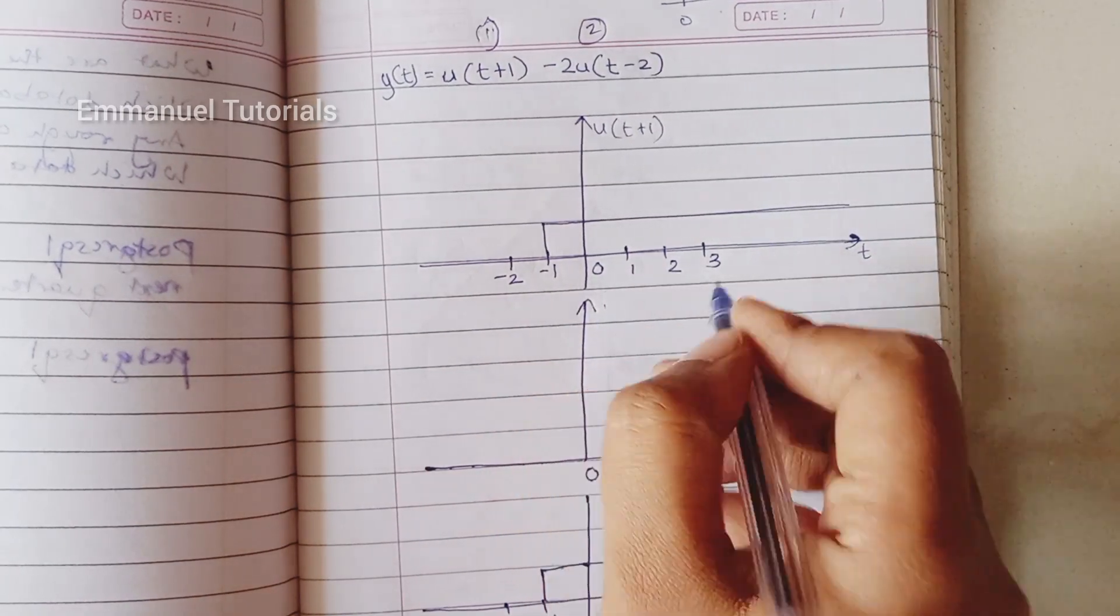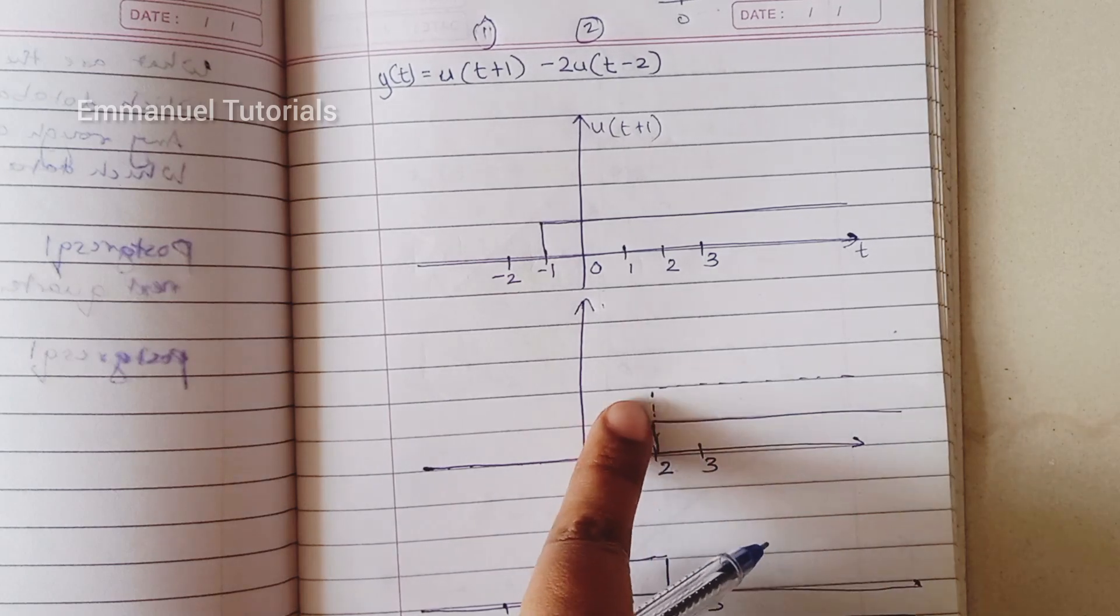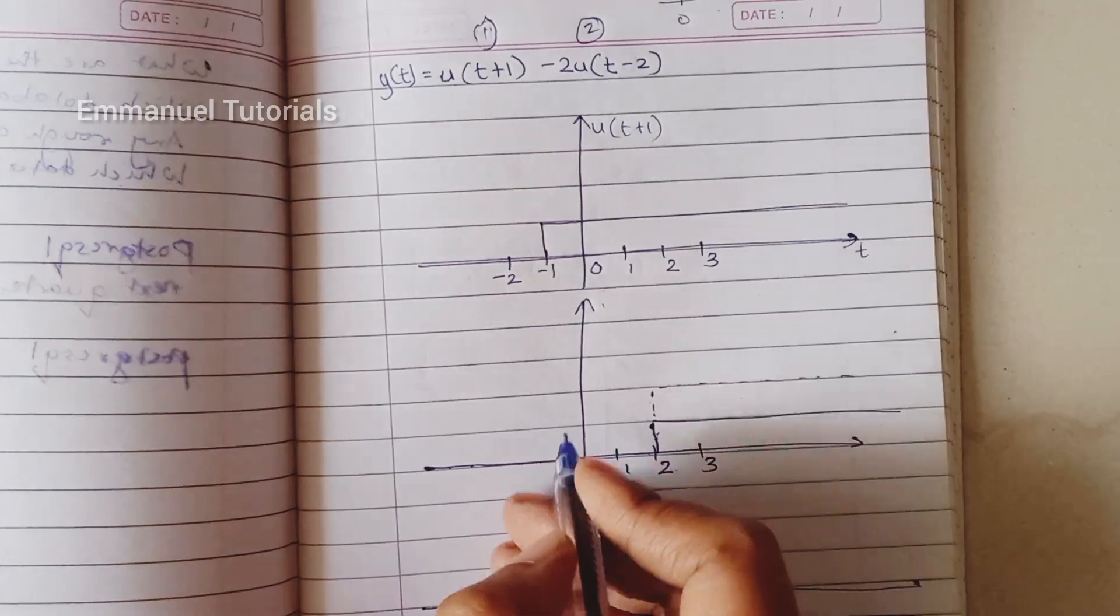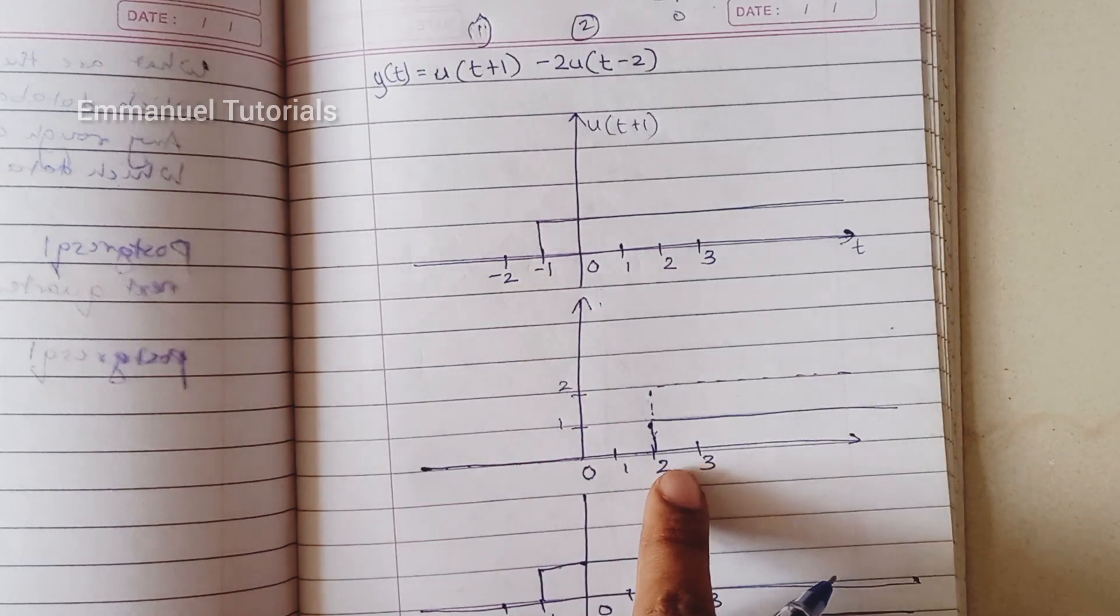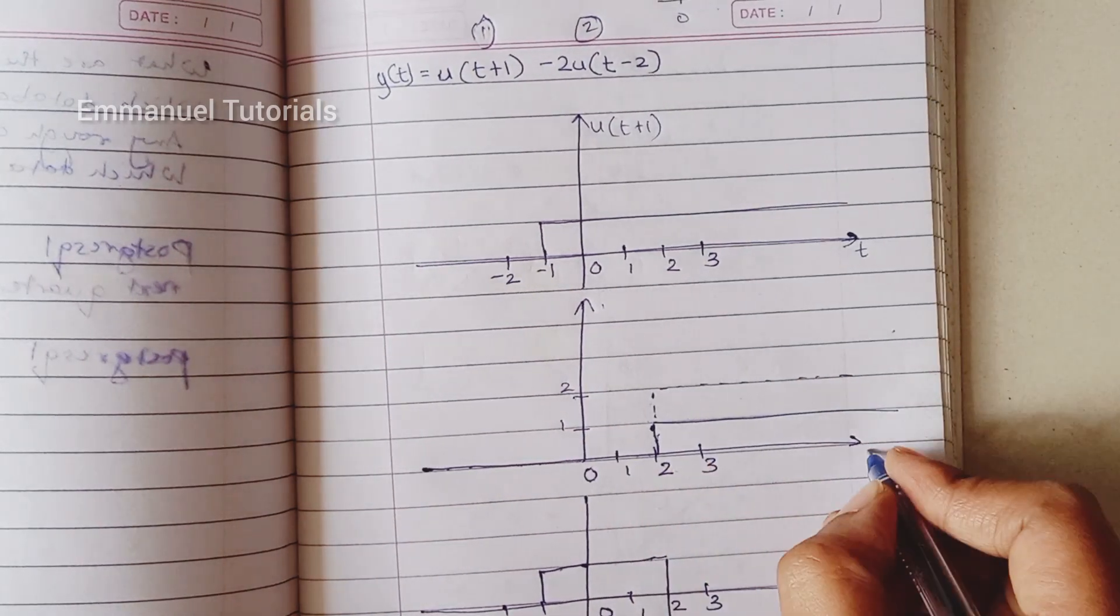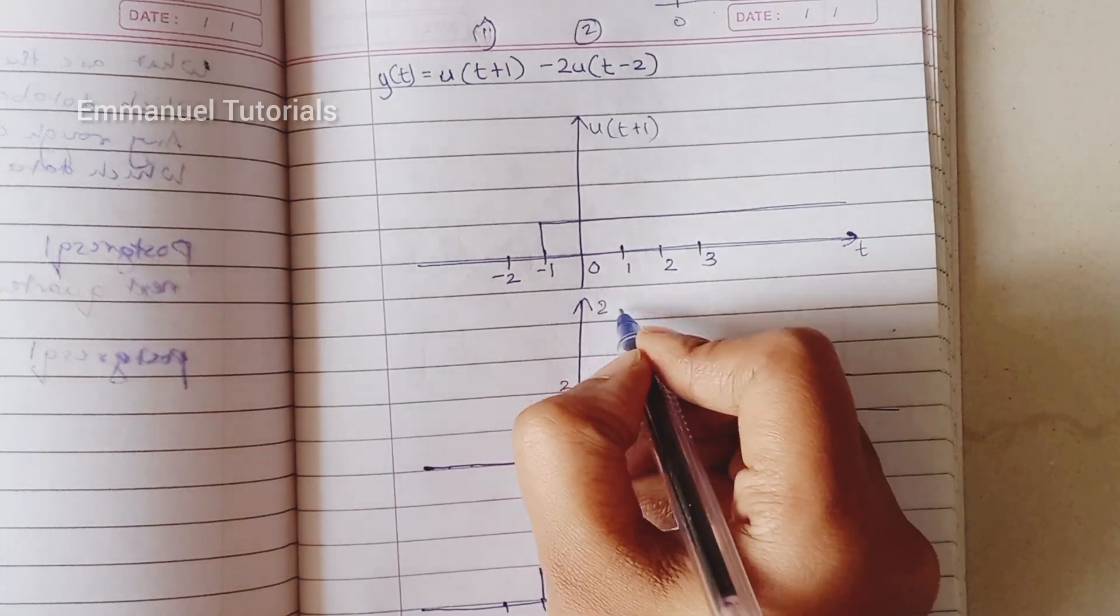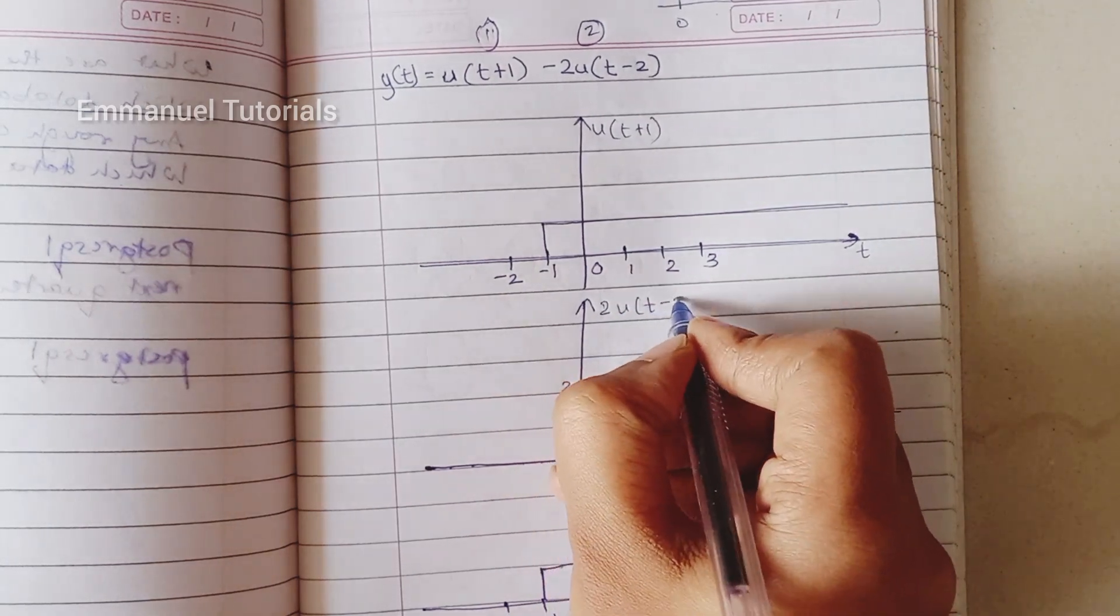So this is u of t minus 2, and then if you multiply it by 2, that is doing amplitude scaling. We will get the same signal with amplitude 2 from t equal to 2. So this is 2u of t minus 2.